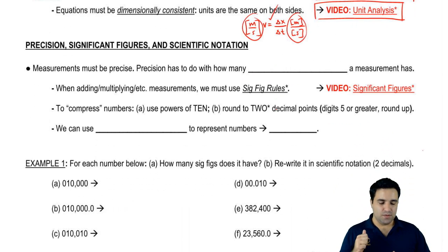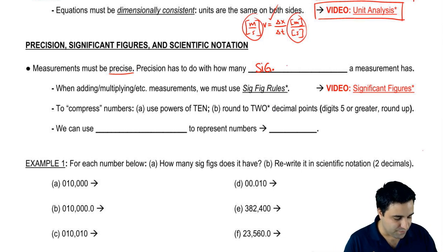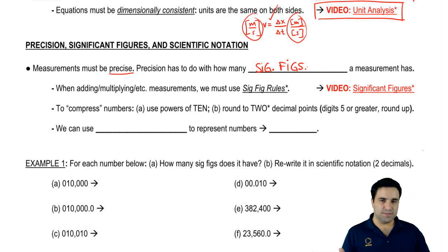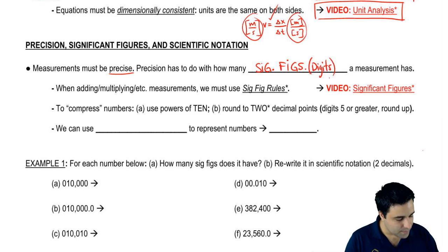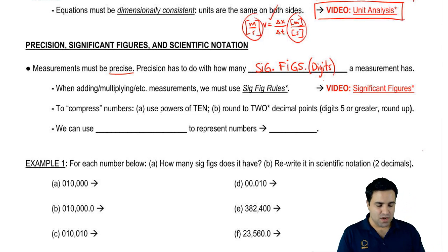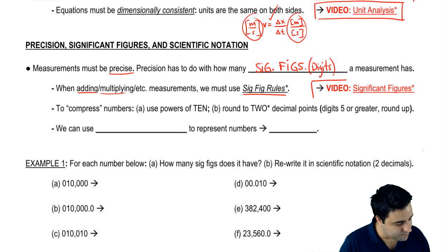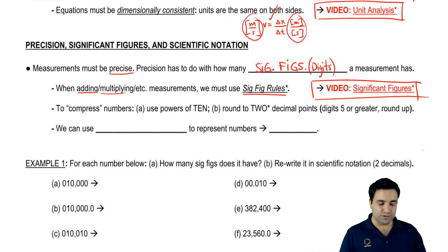And then the other thing we're going to look into is precision, sig figs, and scientific notation. If you've taken chemistry, which most of you have by now, you've done lots of this. In physics, we're much less picky about that stuff, but you still need to know some level of it. Measurements must be precise. Precision has to do with how many significant figures, also sometimes called significant digits, that a measurement has. So the more precise, the more significant digits. When you're adding, multiplying, dividing, subtracting measurements, you must use significant figure rules. Now again, some professors are going to be more picky than others. Most typically don't care about this stuff in physics. If yours does, I'm going to have a video, an optional extra video, on significant figures and their rules. For now, we're just doing a brief overview.